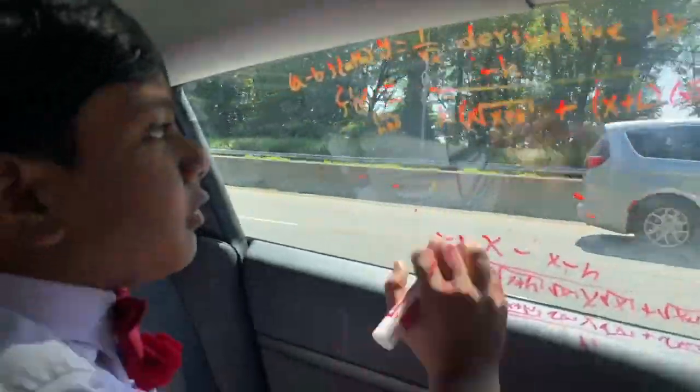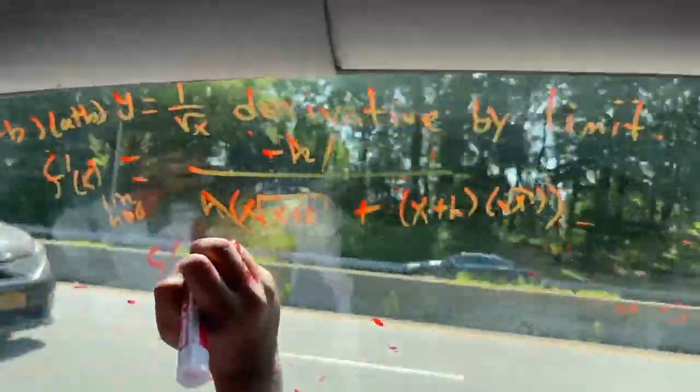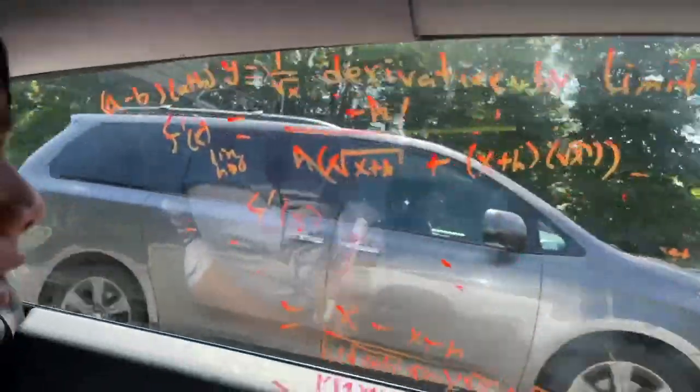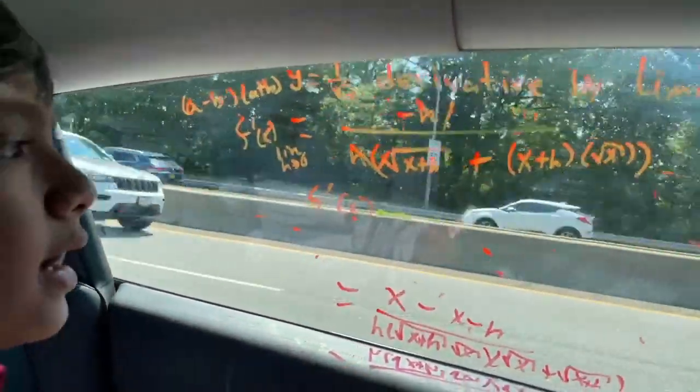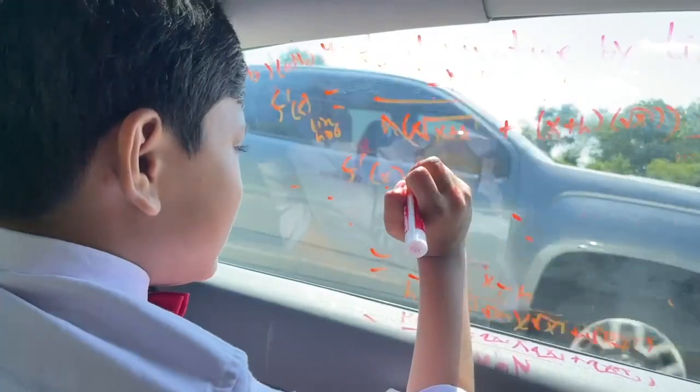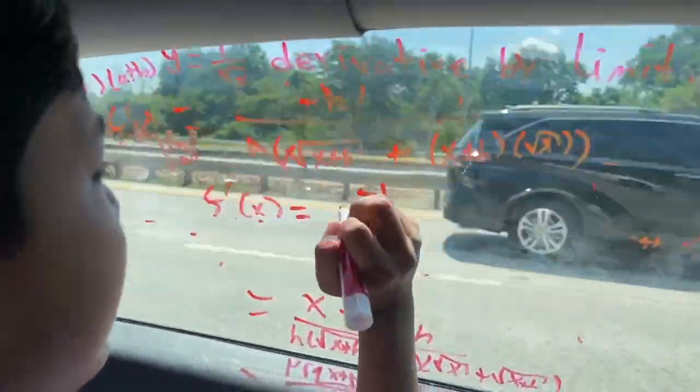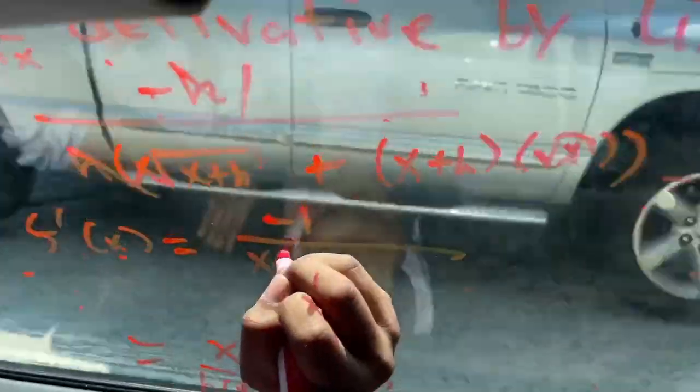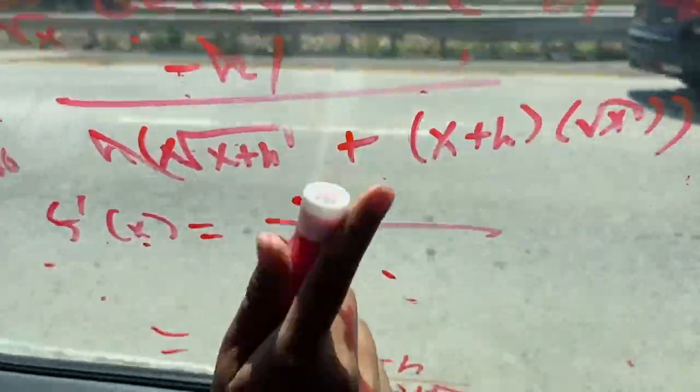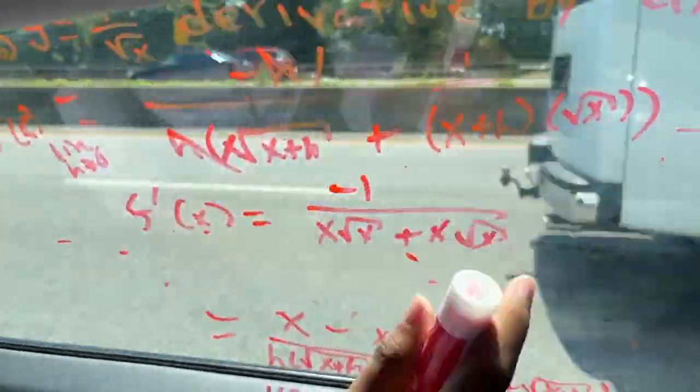Now we're going to cancel this and that out, which gives us negative 1 on the top. So now we can set h to 0 because setting h to 0 won't make the equation rational anymore. So we can get rid of that limit because now we get negative 1 over x times the square root of x. This is set to 0. Plus x times the square root of x. That is set to 0.